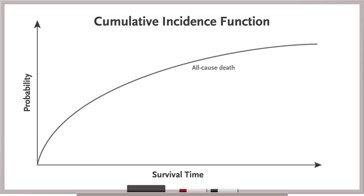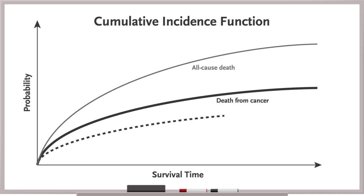So, how do we account for these competing events? Competing risk analysis typically uses a mathematical model, such as the cumulative incidence function, to estimate the probability of one event—say, death from cancer—while accounting for the probability of other events, say, death from other causes, that preclude the possibility of that first event.